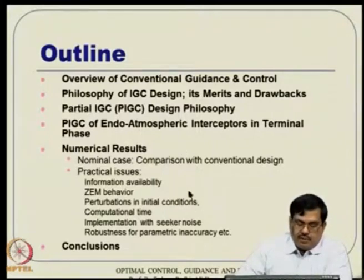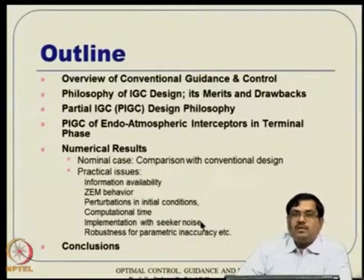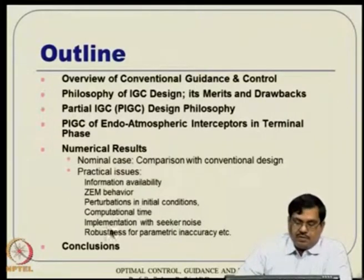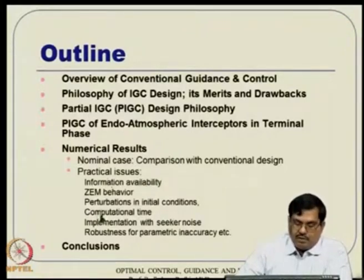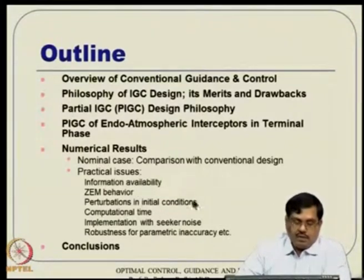We will demonstrate that partial IEGC happens to be in some sense better than both. Then we will address practical difficulty issues: information availability, zero effort miss behavior, perturbations with respect to initial condition, computational time issue, implementation with seeker noise, robustness with respect to parameter inaccuracy. Unless all these things are addressed sufficiently, it is not really a very good design.